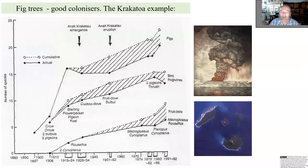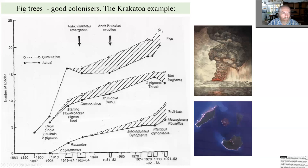Figs, because they are such a favorite food of frugivores, are also very good colonizers. Returning to Krakatau and primary succession there — the timeline for colonization by figs shows that 110 years after the explosion, there were at least temporarily 24 different ficus species, and 20 species actually present. Of course, they can colonize first, but then have to wait for fig wasps to arrive as well.